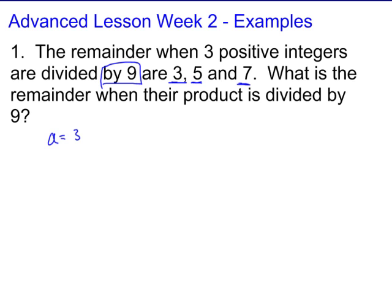So that means they are equivalent, whatever these three numbers are, we call them A, B, and C. They're equivalent to 3 mod 9, 5 mod 9, and 7 mod 9. Those are our three remainders when divided by 9. So the question then becomes, what is the remainder when their product is divided by 9?